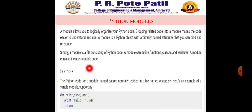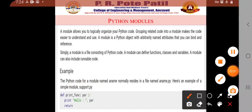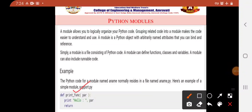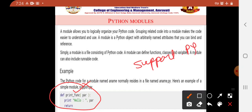The Python code for a module named 'a_name' normally resides in a file named 'a_name.py' — .py is the extension used for Python files. Here is an example of a simple module: support.py. Whatever our file name is, that will be 'a_name.py'. Here we define a function called 'print_function' — this is the definition of a function having the name print_function. This will be stored in support.py.